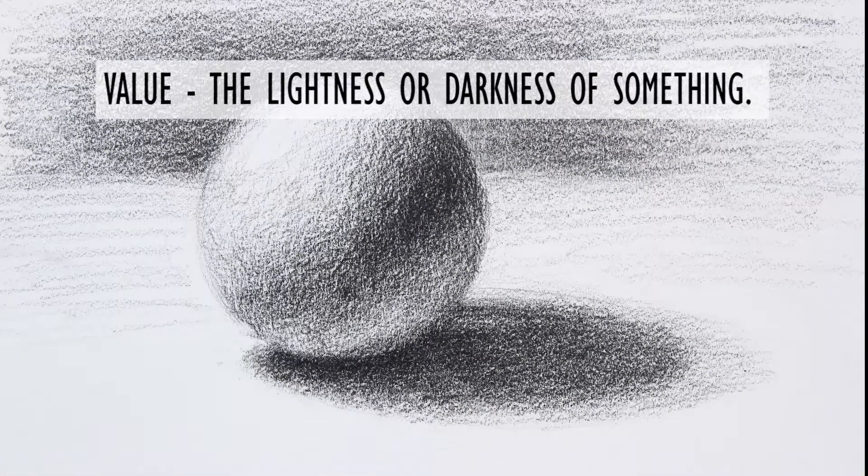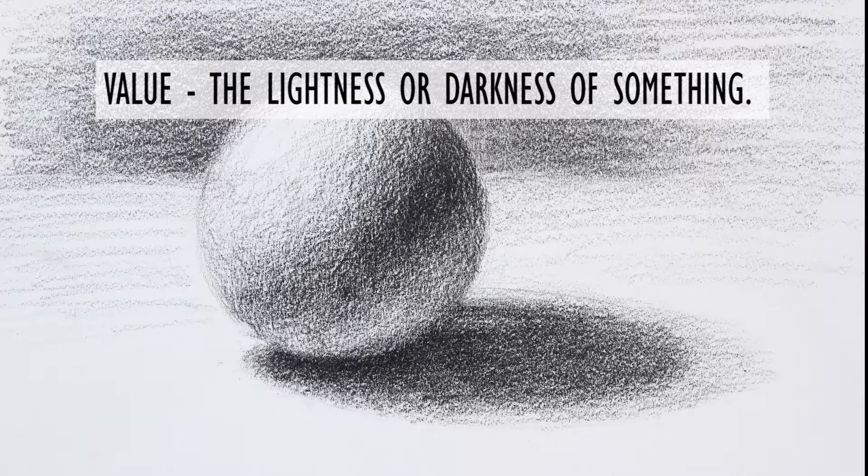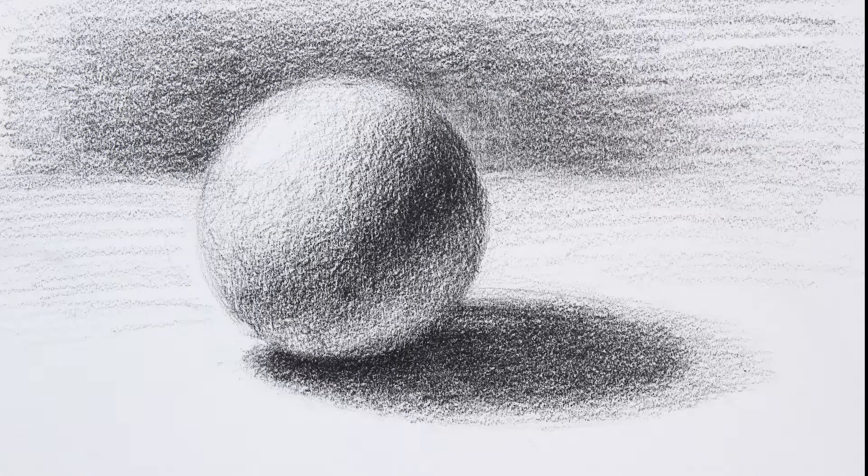In this video I will cover some very basic value structures that we see in both simple and complex objects. Let's define value. Value refers to the lightness or darkness of the areas you are drawing. It's usually best to get a full range of values from white to black in your drawings. This gives them the greatest sense of three dimensions.